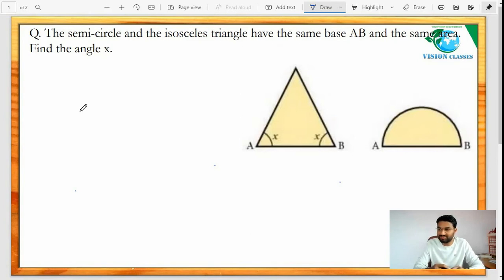...are going to look at one interesting question from IGCSE O-level mensuration part. The question says that the semicircle and isosceles triangle have the same base AB...